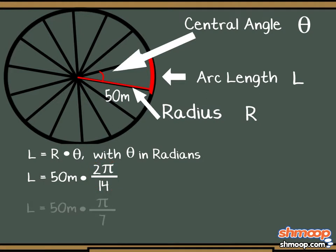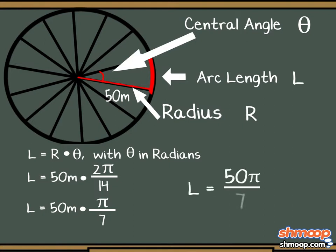2 divided by 14 simplifies to 1 over 7, so we can reduce 2π over 14 to π over 7 radians. Multiplying this by the radius of the garden, 50 meters, we have 50π over 7 meters for the arc length.